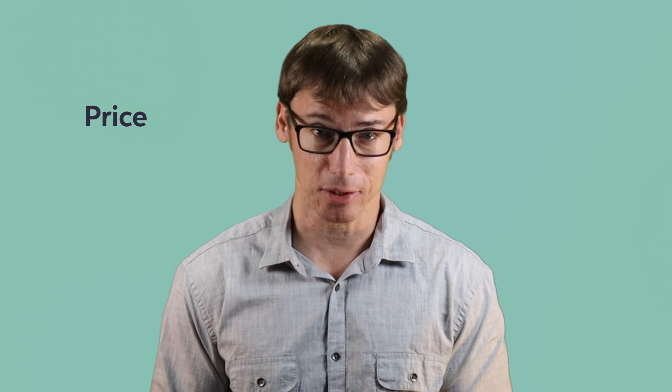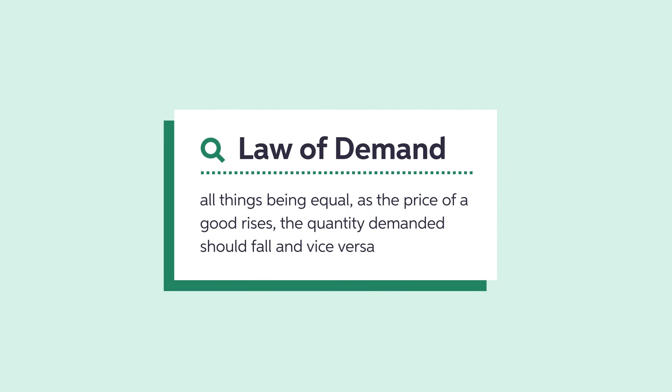The first important demand determinant is price. This is described in the Law of Demand, which states the quantity demanded of a good falls when the price of the good rises and vice versa, holding everything else equal.